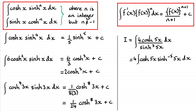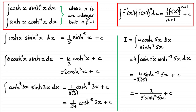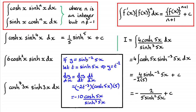We divide by −2, and since differentiating sinh(5x) gave 5cosh(5x), we also divide by that extra 5. So we have 4 × sinh⁻²(5x) divided by (−2×5) = −10. Cleaning this up gives the result −2/(5sinh²(5x)) + c.